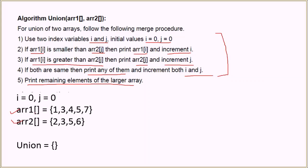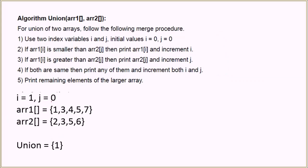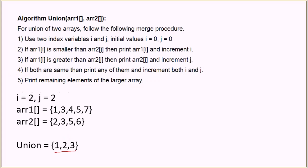Let's start with the dry run before proceeding to the code. We have array 1 and array 2, with index variables i and j starting at zero. We compare the first elements: 1 is smaller than 2, so we increment i and put 1 in the union array. Next, i=1 and j=0, so we compare 3 with 2 — 2 is smaller, so we put 2 in the union array and increment j. Now i=1 and j=1, we compare 3 with 3 — both are equal, so we put 3 in the union array and increment both i and j.